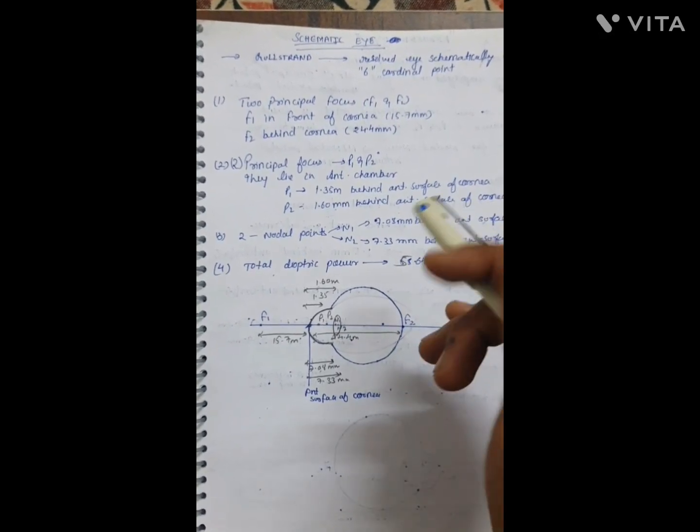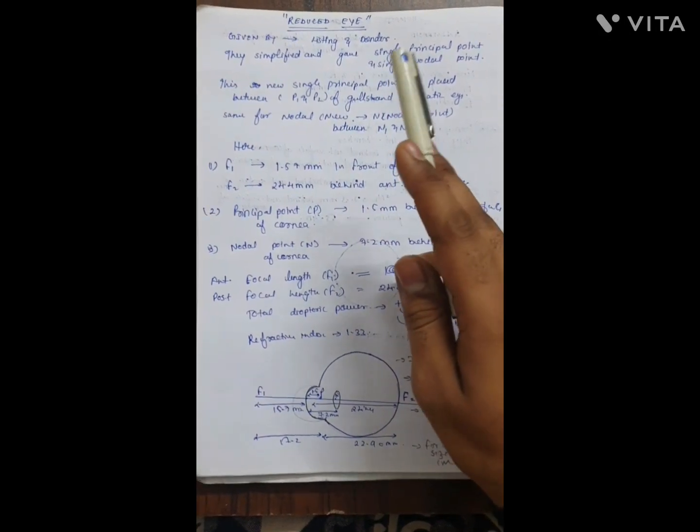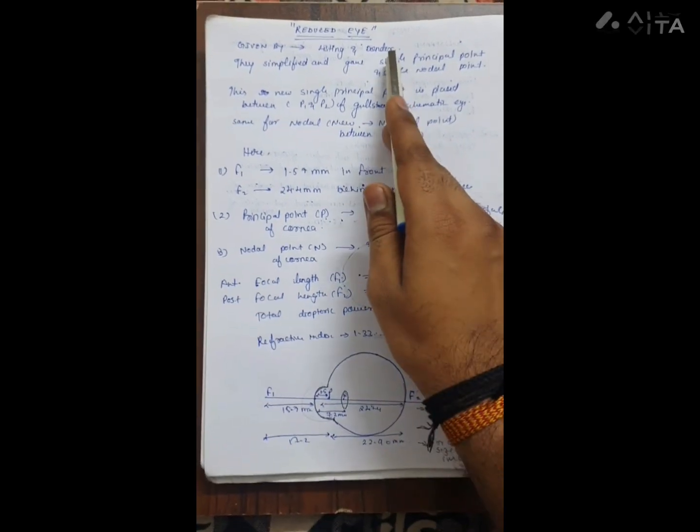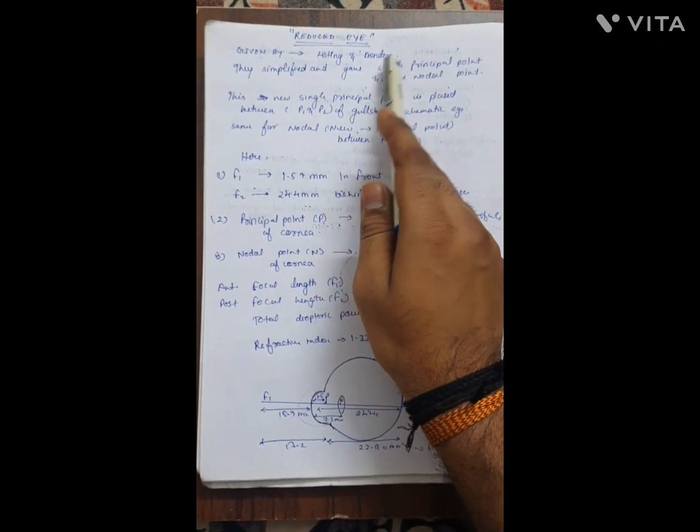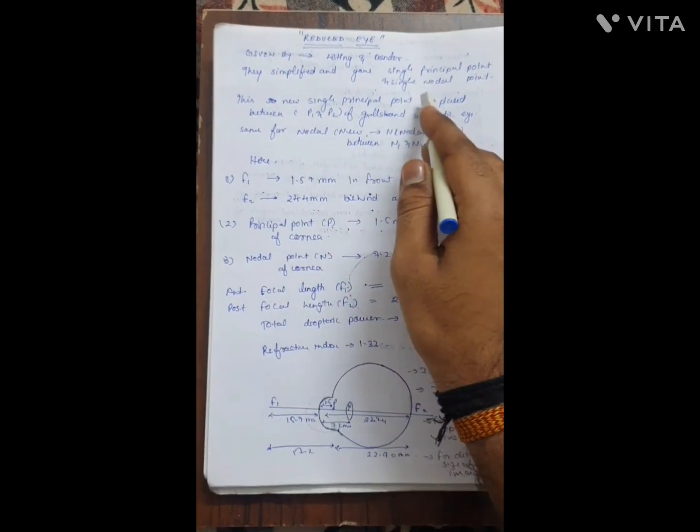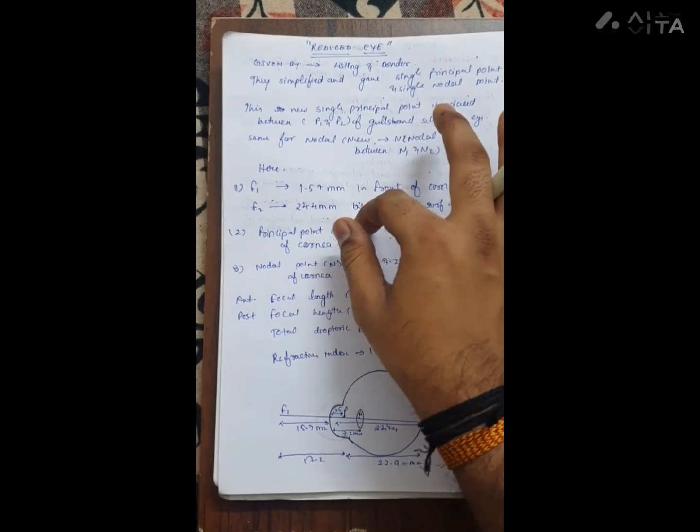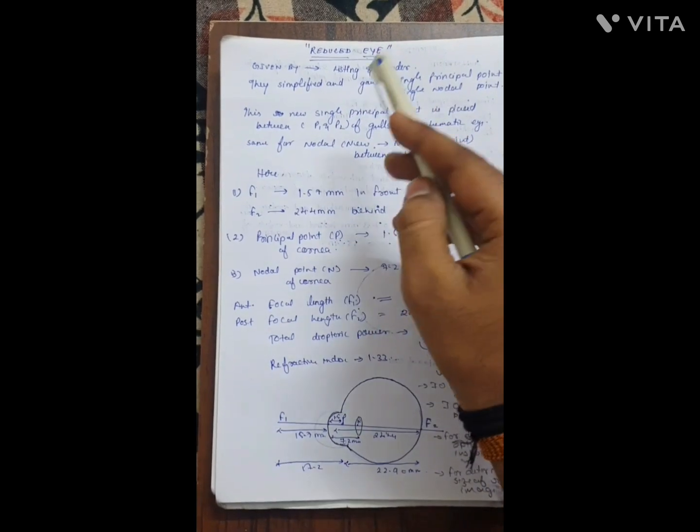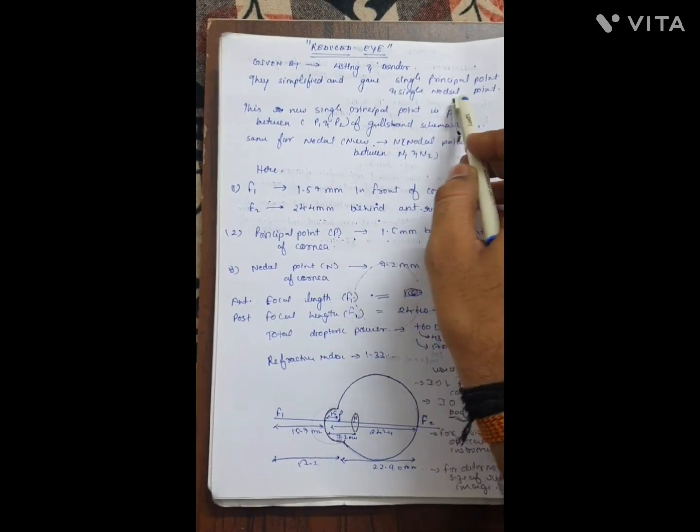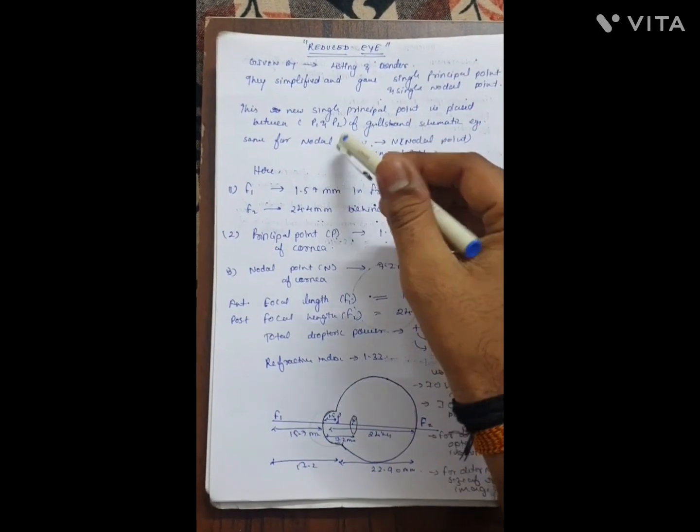The reduced eye is a simplified version of the schematic eye, given by Listing and Donder. Instead of having two points for each type, they compressed it into single points - one principal point instead of P1 and P2, and one nodal point instead of N1 and N2.